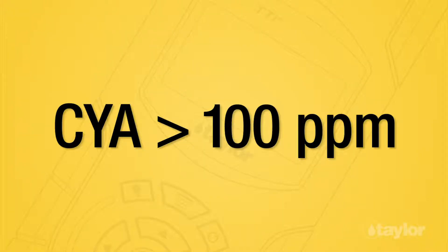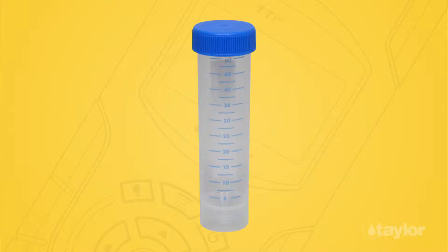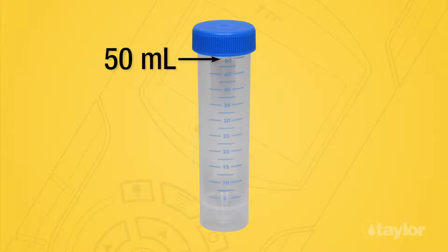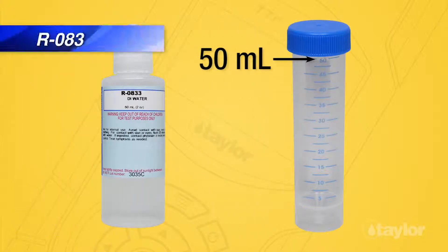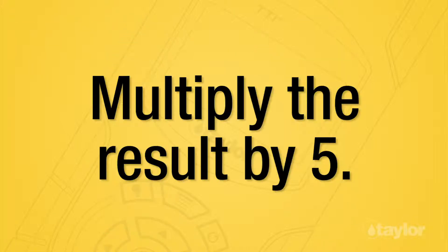Note: for cyanuric acid concentrations greater than 100 parts per million, you must dilute the sample one to four. Fill the dilution vial to the 10-ml mark with the sample and then dilute to the 50-ml mark with DI water or cyanuric acid-free water. Retest using this diluted sample and multiply the result by five.